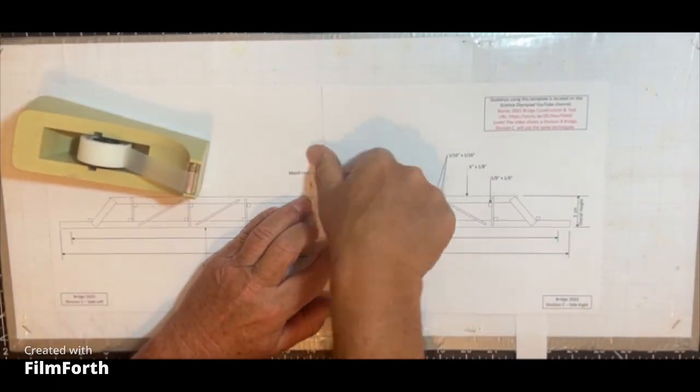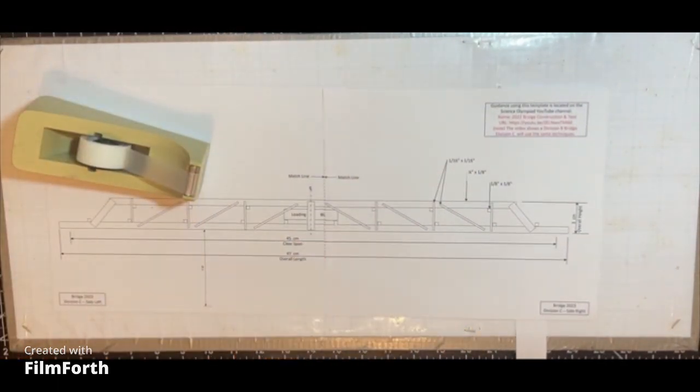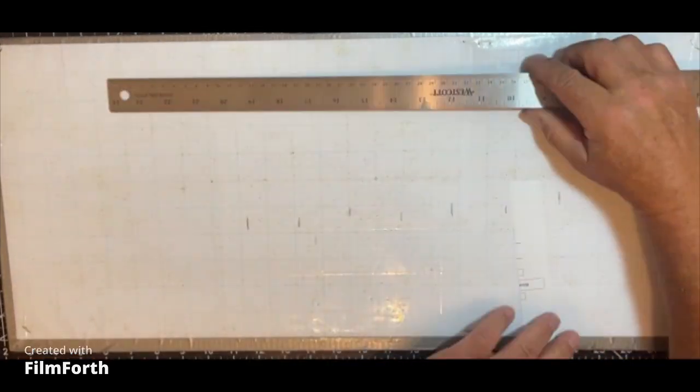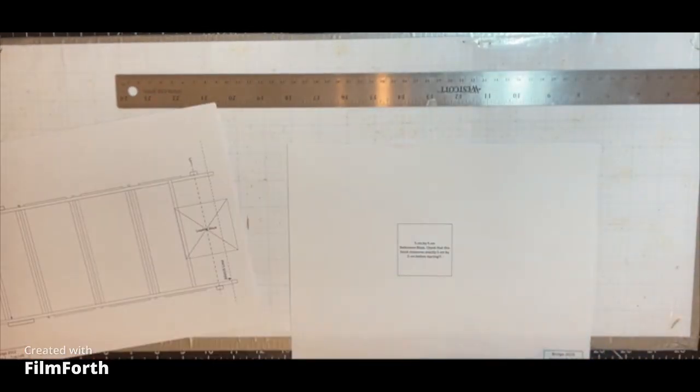This will be the pieces that we'll use to make the truss. I'm verifying the span here to make sure that the printout is the correct dimension, and I went through and did the same thing for the top view.